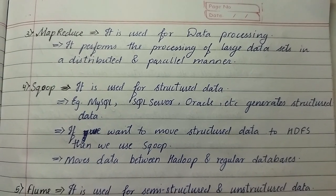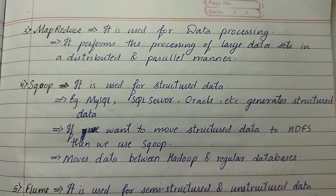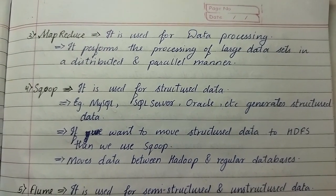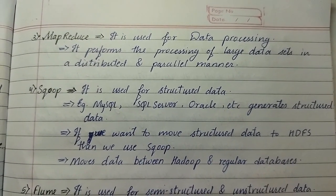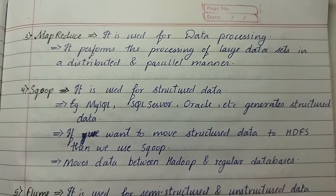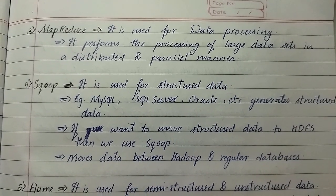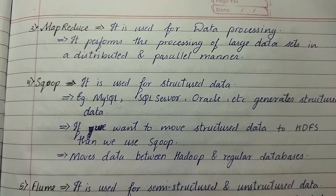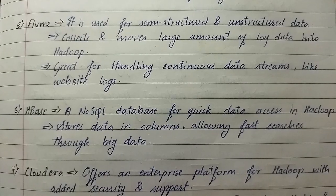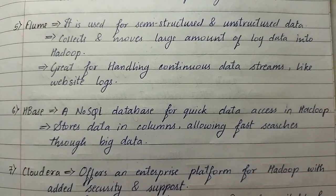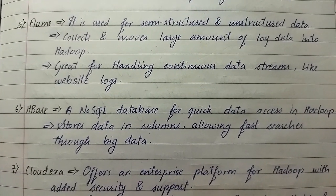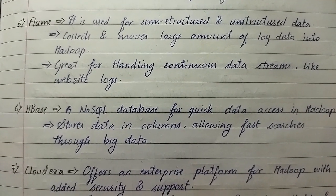Fourth is Sqoop. It is used for structured data — for example, MySQL, SQL Server, Oracle, etc. These generate structured data, and if you want to move structured data to HDFS then we use Sqoop. Sqoop moves data between Hadoop and regular databases. Fifth is Flume, and it is used for semi-structured and unstructured data. It collects and moves large amounts of log data into Hadoop, and it is great for handling continuous data streams like website logs.